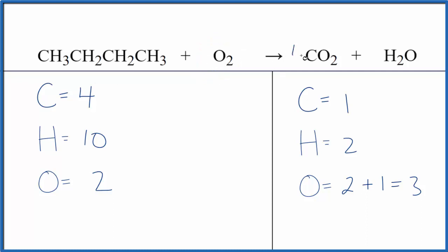Let's just put a 4 in front of the CO2. 1 times 4, that'll balance the carbons. We do need to update the oxygens. 4 times 2 is 8 plus the 1 with the water. That gives us 9.